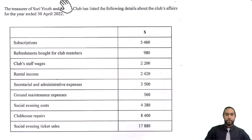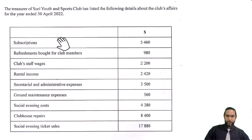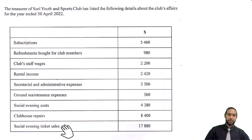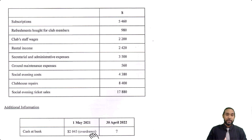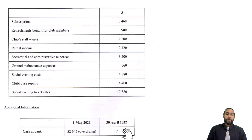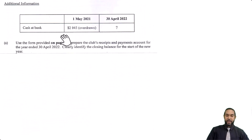So it reads: the treasurer of Surrey Youth and Sports Club has listed the following details about the club's affairs for the year ended 30 April 2022. We have subscriptions, refreshments bought for the club, club staff wages, rental income, secretarial and admission expenses, costs, repairs, and sales. These are all receipts and payments. Additional information: on the 1st of May 2021, which is the start of the year, the cash at bank was 2,045 and that was overdrawn, meaning a negative bank balance. We don't know the closing balance for 30th April 2022.